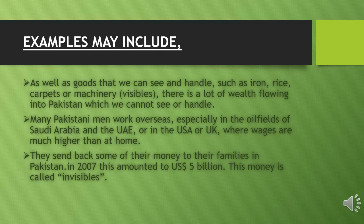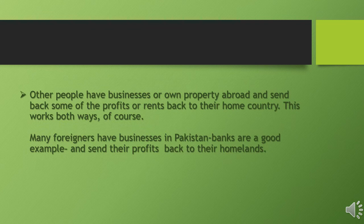Examples may include: as well as visible goods that we can see and handle — such as iron, rice, carpets, or machinery — there is a lot of wealth flowing into Pakistan which we cannot see or handle. Many Pakistani men work overseas, especially in the oil fields of Saudi Arabia and the UAE, or in the USA or UK, where wages are much higher than at home. They send back some of their money to their families in Pakistan; in 2007 this amounted to 5 billion US dollars. This money is called invisibles. Other people have businesses or own property abroad and send back profits or rents to their home country. This works both ways — many foreigners have businesses in Pakistan, banks being a good example, and send their profits back to their homelands.